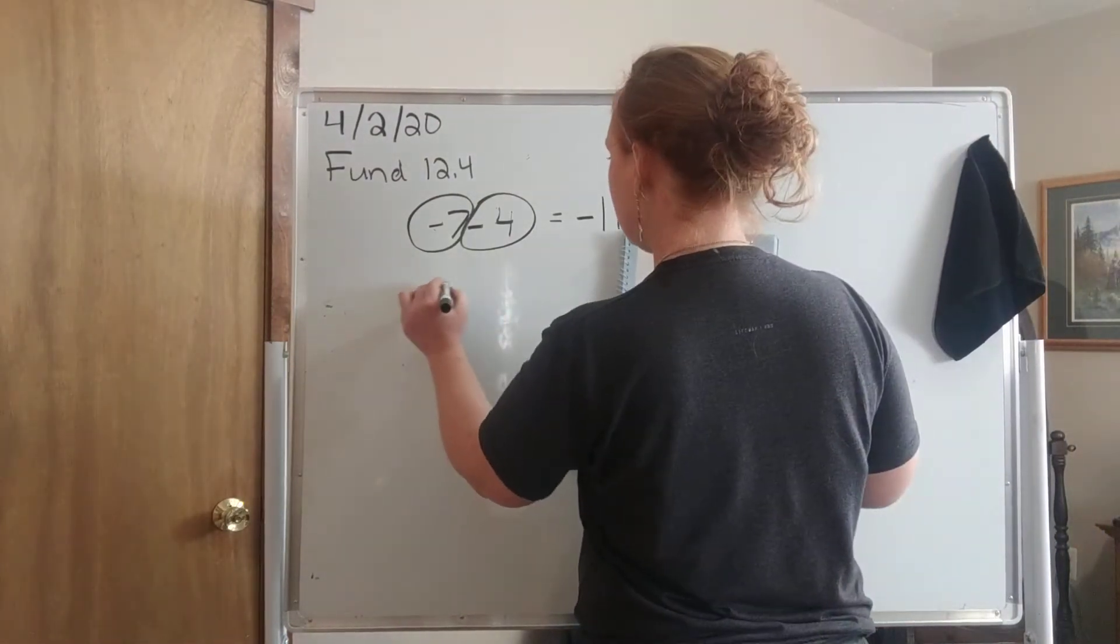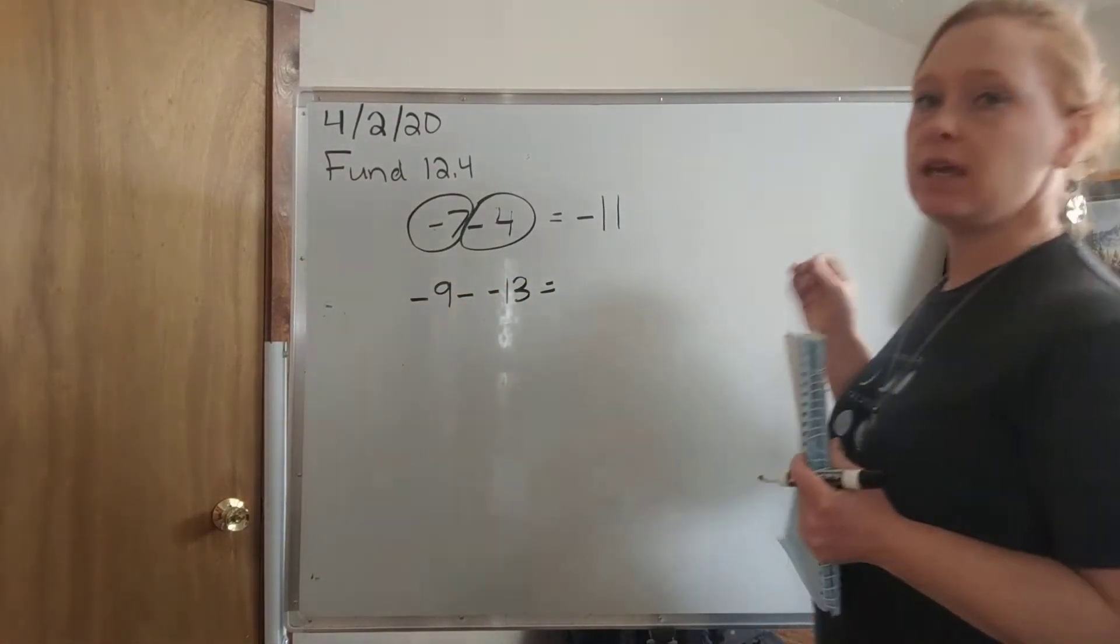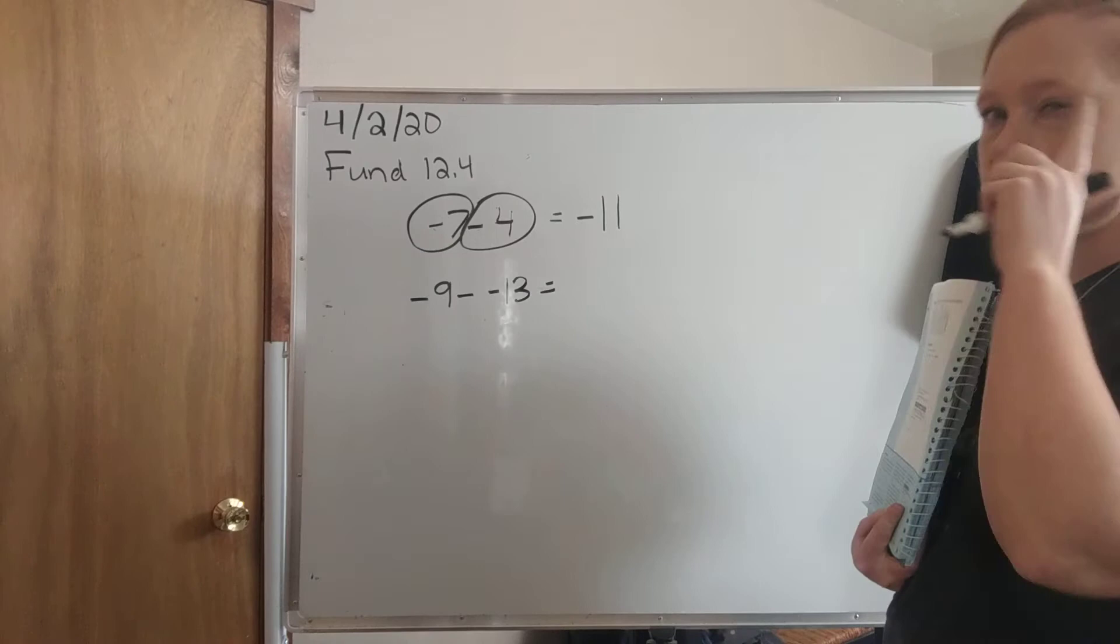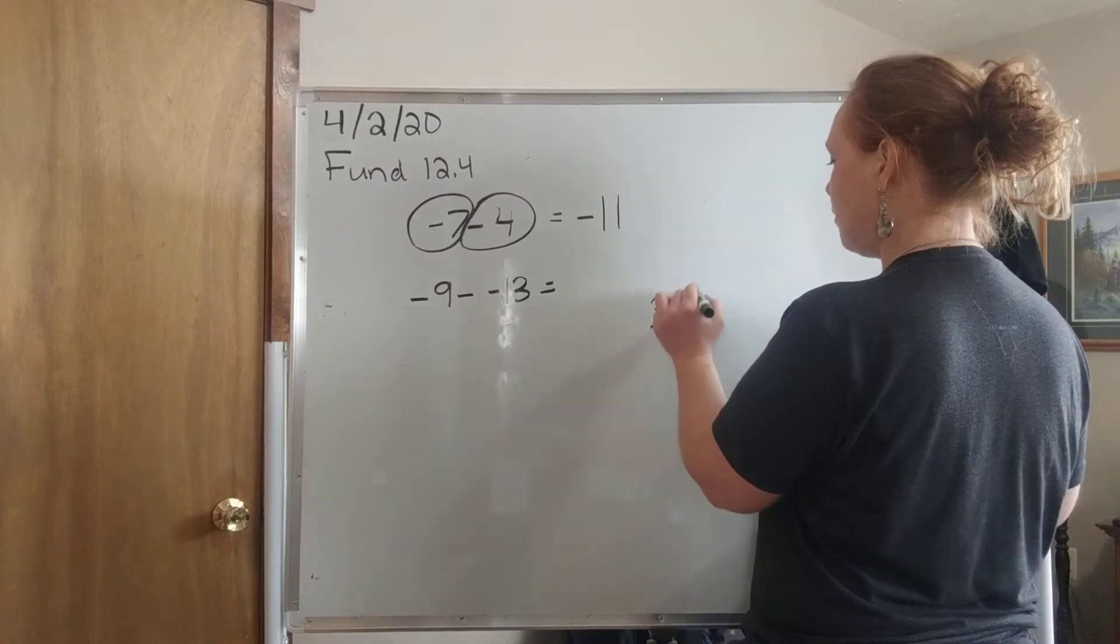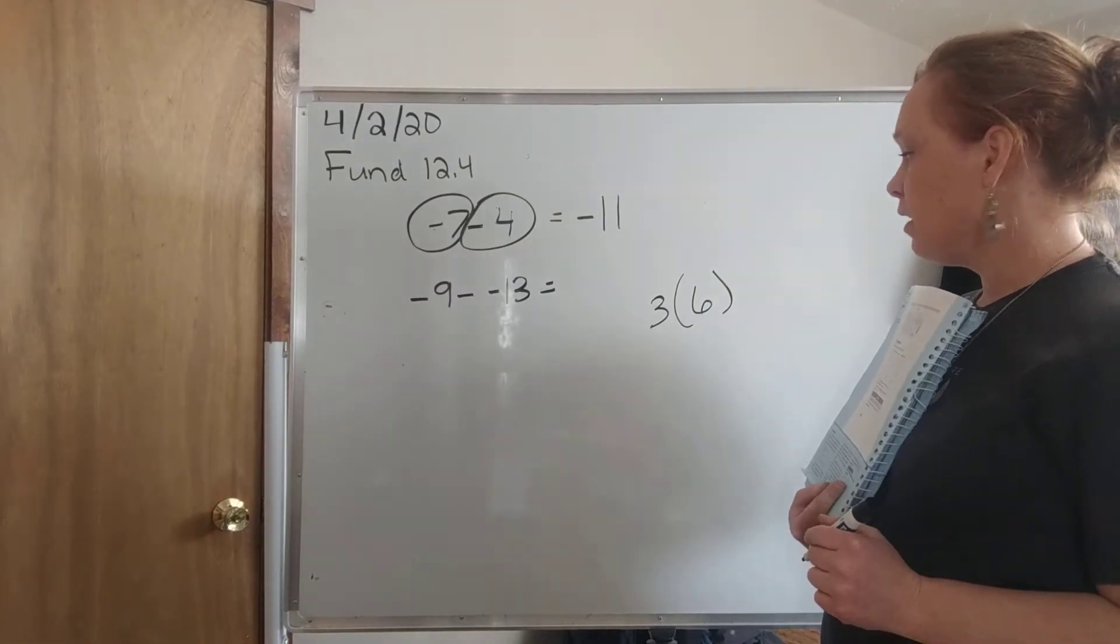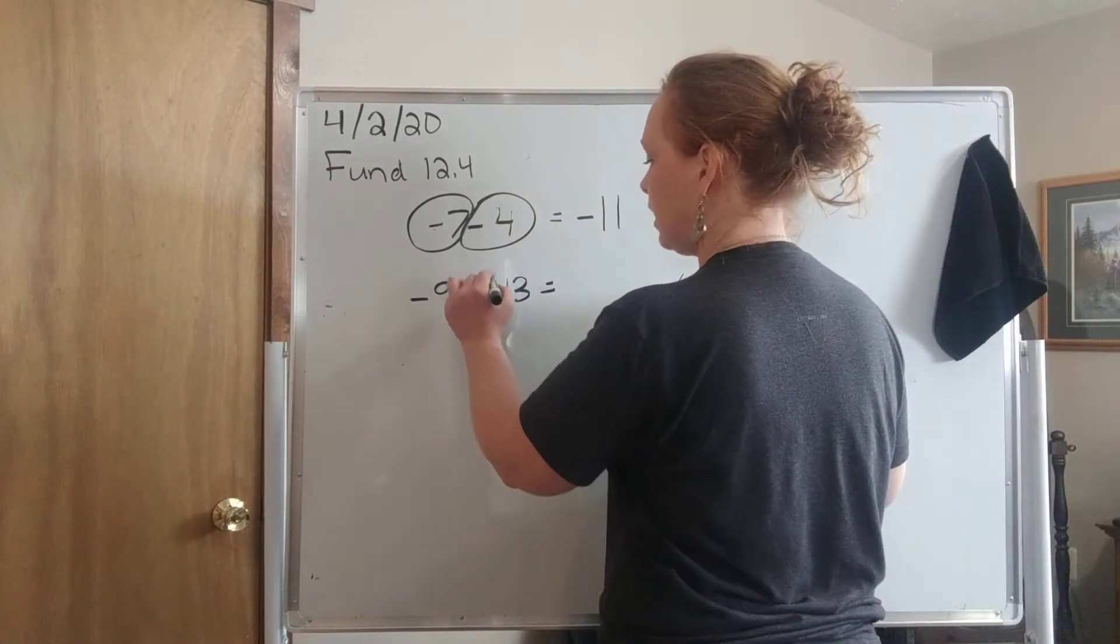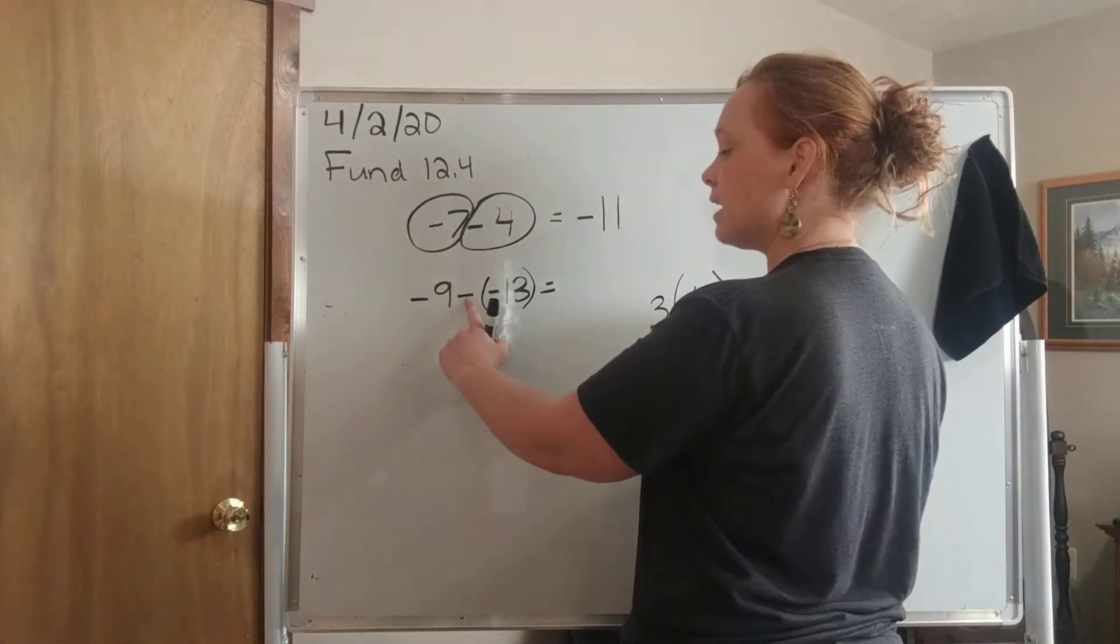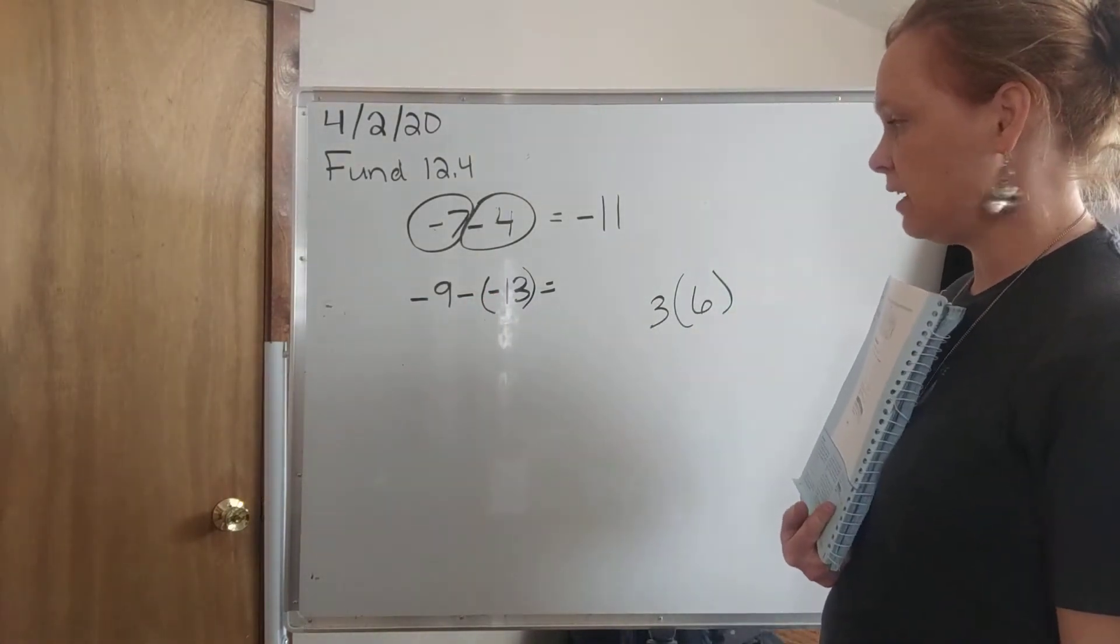Let's look at this next one. Negative 9 minus negative 13. So here is where something very interesting happens. And I want to teach you a little trick. We're going to move a little bit ahead in algebra to make this a little bit easier for your mind. If we had a 3 next to a 6, we would consider this multiplication. If there is not a sign telling you what to do, it's multiplication. Stay with me for just a second.